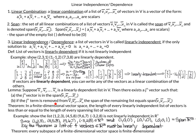Another theorem we will prove: in a finite dimensional vector space, the length of every linearly independent list of vectors is less than or equal to the length of every spanning list of vectors. Last, we'll have one more theorem: every subspace of a finite dimensional vector space is finite dimensional. That wraps up our overview.